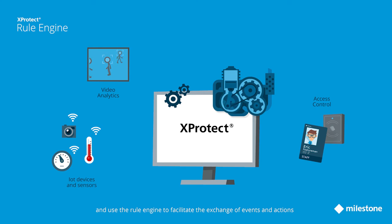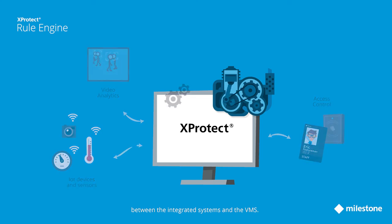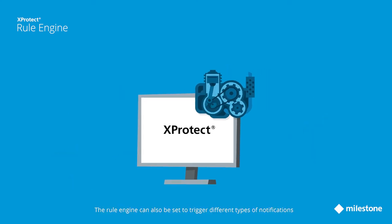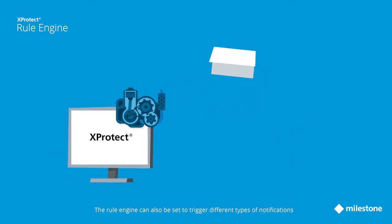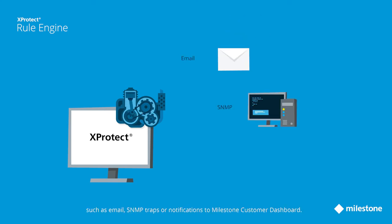The rule engine facilitates the exchange of events and actions between the integrated systems and the VMS. The rule engine can also be set to trigger different types of notifications, such as email, SNMP traps, or notifications to Milestone Customer Dashboard.